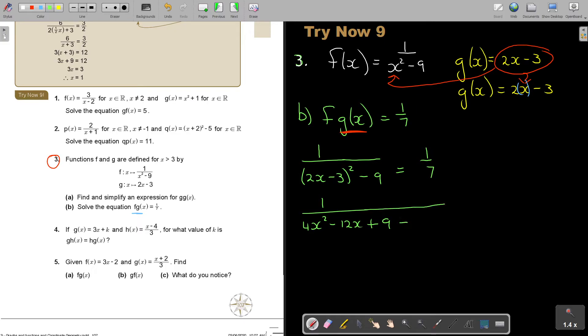Let's see if I simplify this. Luckily, that cancel. So it's 1 over 4x squared minus 12x. And it's 1 over 7.